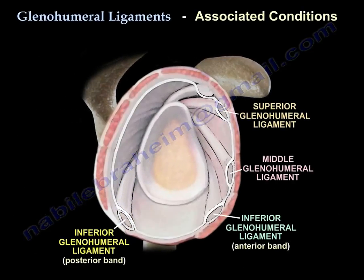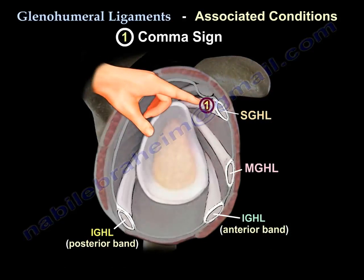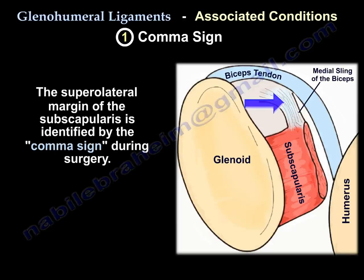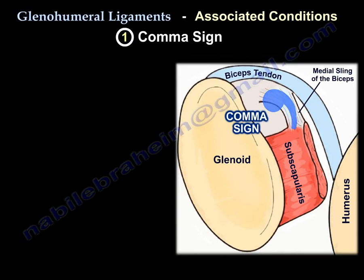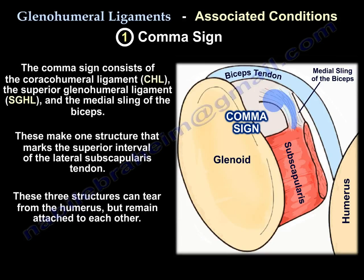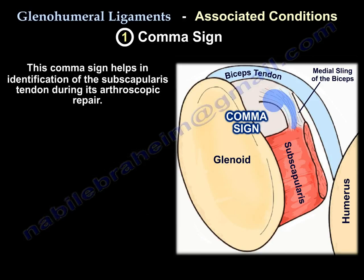Regarding important associated conditions with the glenohumeral ligaments: the superior glenohumeral ligament is associated with the comma sign. A torn superior lateral margin of the subscapularis is identified by the comma sign during surgery. The comma sign fibers are oriented perpendicular to the fibers of the subscapularis tendon. The comma sign consists of the coracohumeral ligament, the superior glenohumeral ligament, and the medial sling of the biceps — forming one structure that marks the superior interval of the lateral subscapularis tendon. This structure can tear from the humerus but remain attached to each other, helping identification of the subscapularis tendon during arthroscopic repair.